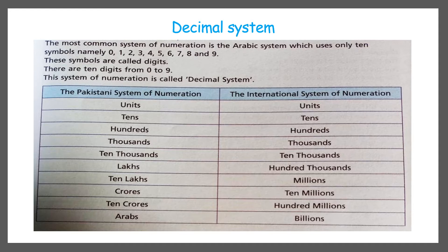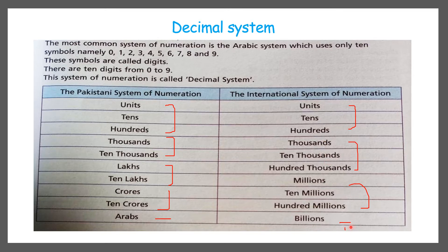In the Pakistani system, numbers are arranged first in the unit group, then in the thousand group, then in lakhs, then crores, and then arab. In the international system, first is the unit group, then thousands, then millions, and then billions. In the Pakistani system, the first group has three digits but the next groups have two digits each. In the international system, all groups are of three digits — ten, hundred, thousand; million, hundred million; then billion is again three digits.